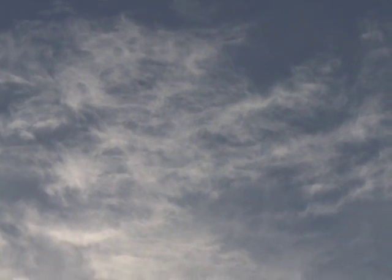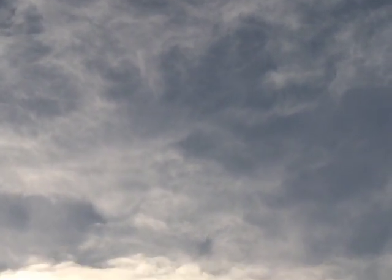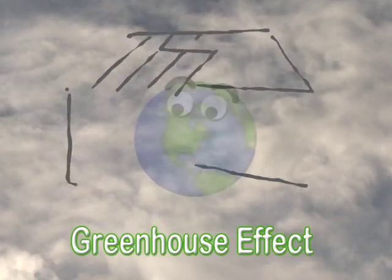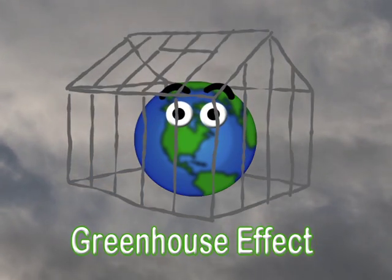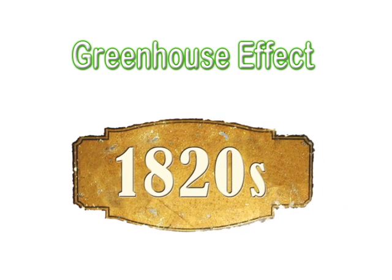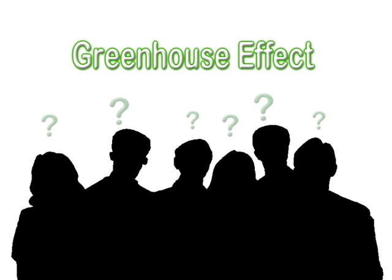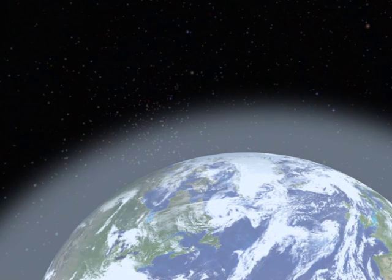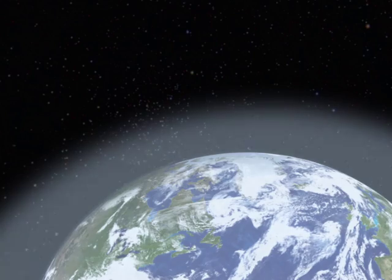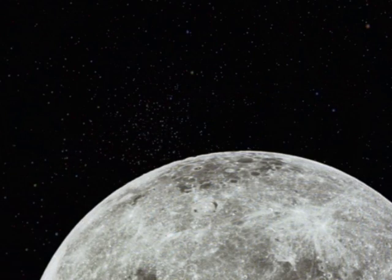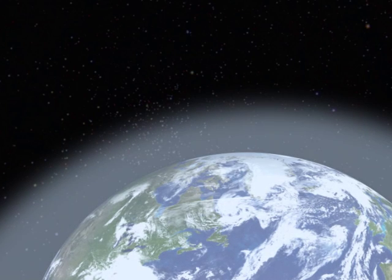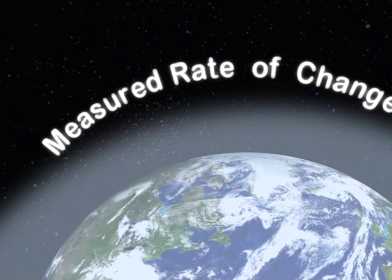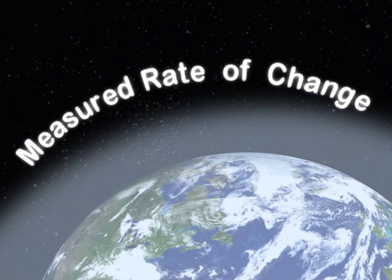If there's one term connected to climate change that we've all heard over the past decade or two, it's the greenhouse effect. Cartoonists are fond of drawing the Earth encased in a greenhouse when they want to make a point about climate change. But while the term, which goes back to the 1820s, is familiar, a good many of us don't actually know what it means and why it's important. Climate change starts with our atmosphere, the combination of gases surrounding the Earth without which this planet would be a large, lifeless sphere. While many processes in the Earth's atmosphere occur naturally, it's the measured rate at which some are changing that is a major cause of concern.